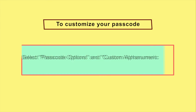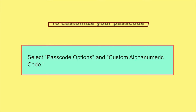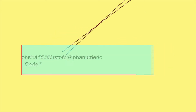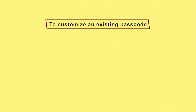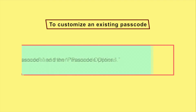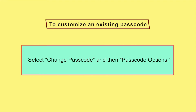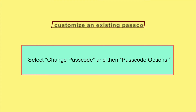However, we suggest choosing a passcode that's alphanumeric and longer than 6 characters, because it's simply harder to crack even if Apple's hardware is designed to slow down passcode cracking tools. To customize your passcode, select passcode options and custom alphanumeric code. If you want to customize an existing passcode, select change passcode and then passcode options.